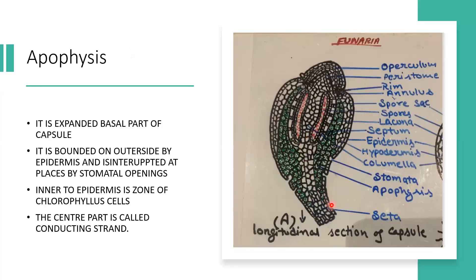The expanding part where the seta ends and the capsule begins is called the apophysis. The outermost layer of the apophysis is the epidermis, interrupted at places by stomatal openings which help in gaseous exchange. Inner to the epidermis is a zone of parenchymatous cells rich in chloroplasts, called chlorenchymatous tissue or chlorophyllous cells, which help in photosynthesis. The central part again has a conducting strand. This green zone makes the capsule autotrophic.